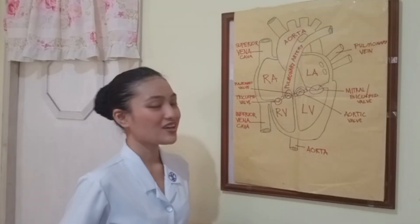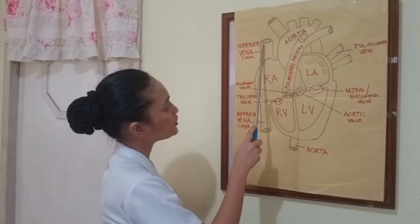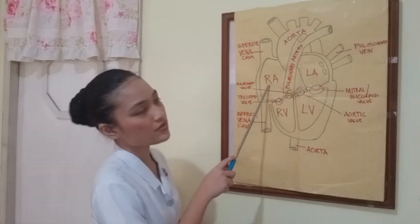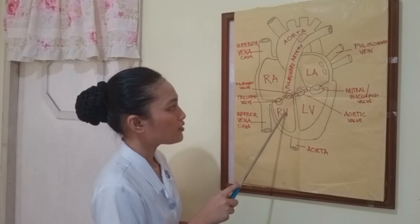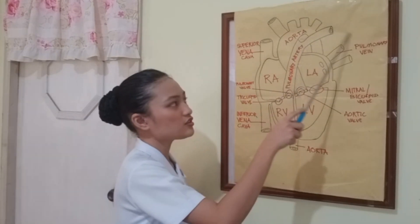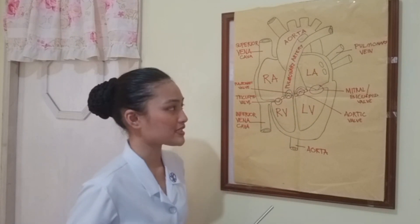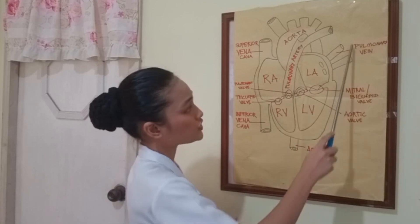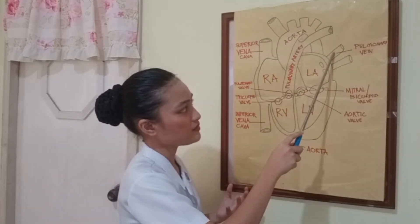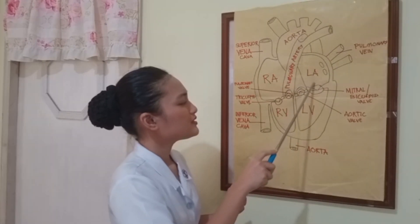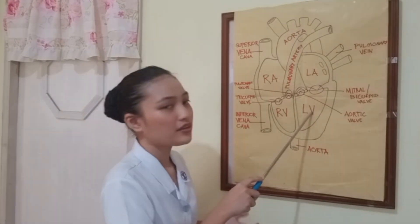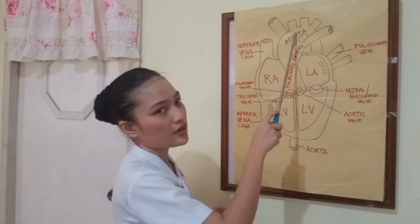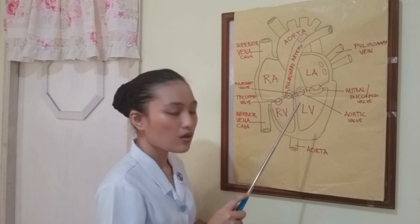Now let's discuss the blood circulation. Blood from all throughout the body will enter the heart through the superior and inferior vena cava, down to the right atrium, down to the right ventricle, passing through the tricuspid valve, and then through the pulmonary artery into the lungs where oxygenation takes place. The blood will then become oxygen-rich and will enter the heart again through the pulmonary vein, down to the left atrium, down to the left ventricle, passing through the mitral valve. The left ventricle will then eject the oxygen-rich blood into the aorta, where it will be distributed all throughout the body.